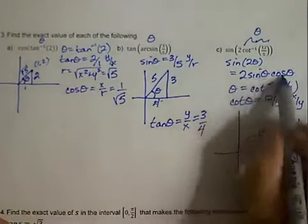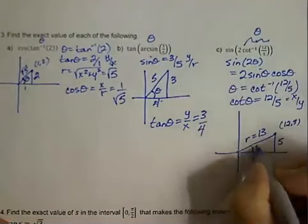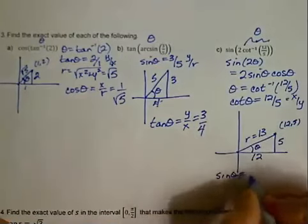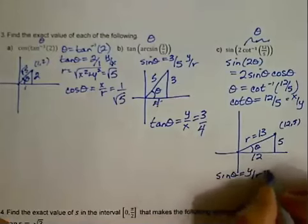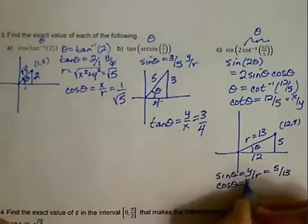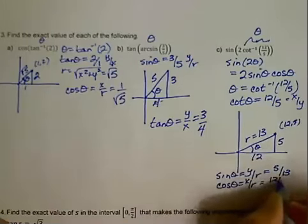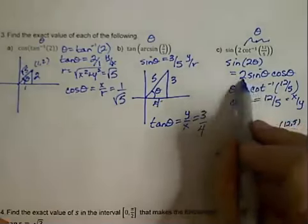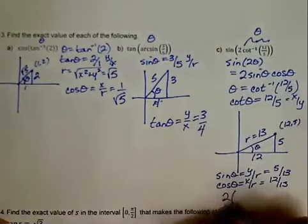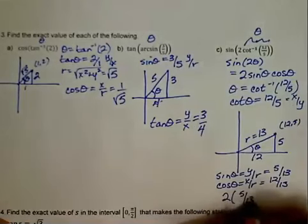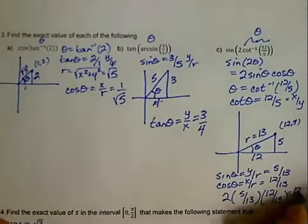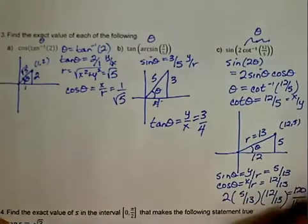We need the sine and cosine of theta. Sine of theta is y over r, which is 5 over 13. Cosine of theta is x over r, which is 12 over 13. So for sine of 2 theta, we have 2 times sine theta times cosine theta — that's 2 times 5 over 13 times 12 over 13 — which gives us 120 over 169.